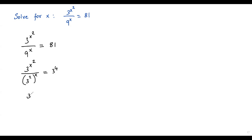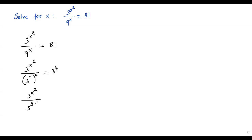We have 3 to the power x squared over 3 squared to the power x. Here we have base 3 with exponent 2, and for the complete term we have again exponent x. Whenever we have two exponents like this, we can multiply them using the power of a power rule. Multiplying exponents 2 and x gives 2x, so we have 3 to the x squared over 3 to the 2x equals 3 to the 4th power.